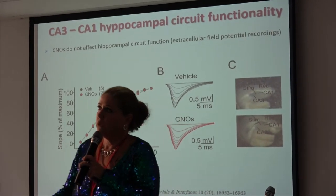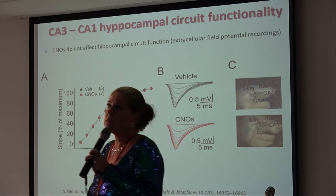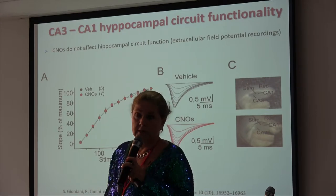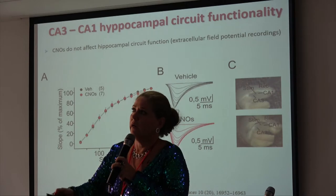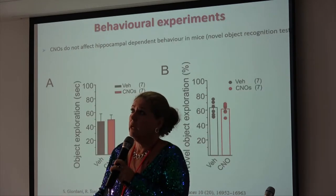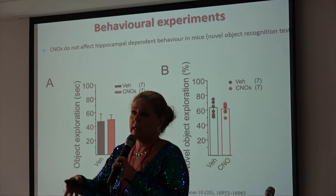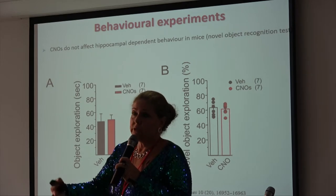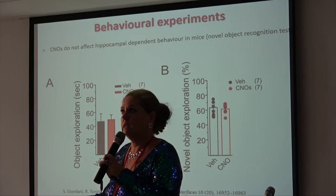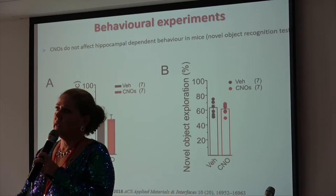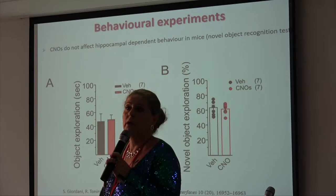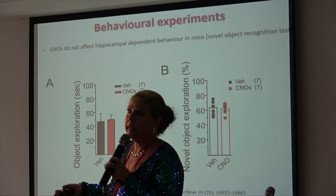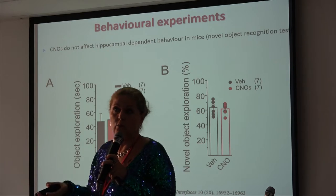Here you can see we compare the mice treated with the onions with those treated with just vehicle, and the results were pretty much the same, both in the hippocampus circuit functionality and in the behavioural experiment. The mice were given an object — the object exploration test and the novel object exploration — and you can see in red the results with the carbon nano onion mice compared with the vehicle mice. There are basically no differences, which is quite promising.